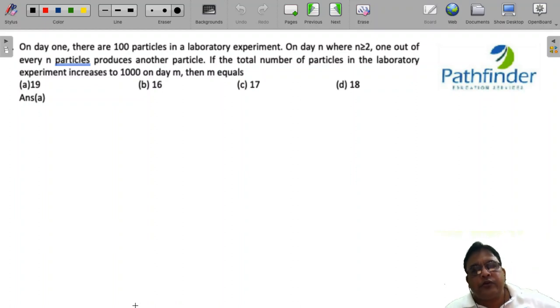CAT 22, Slot 2, Question Number 7. On day 1, there are 100 particles in a laboratory experiment. On day n, where n is greater than or equal to 2, one out of every n particles produces another particle. If the total number of particles in the laboratory experiment increases to 1000 on day m, then m equals...